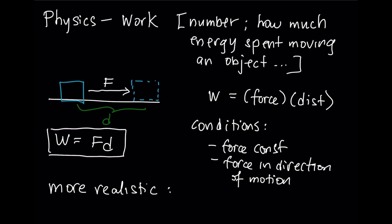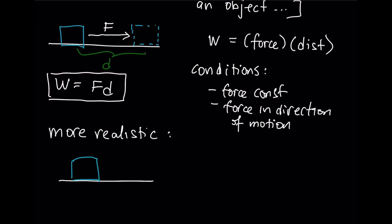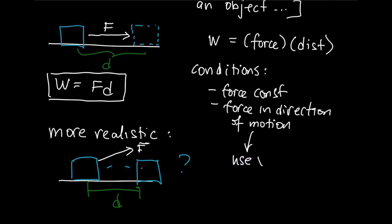This situation isn't very realistic. Rather than having a force in the direction of motion, you might have a force at some angle — for example, a rope that you're pulling. If I want to move an object a certain distance, how much work am I doing to get it to a new location? To make it more realistic, I should be using vectors.